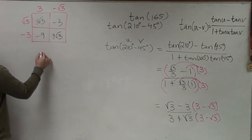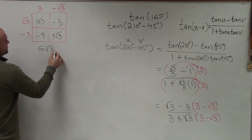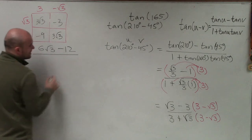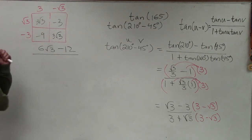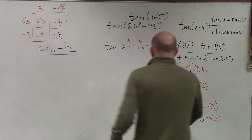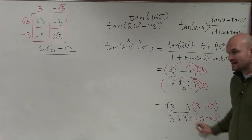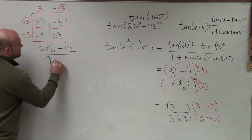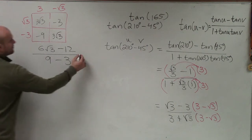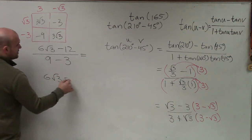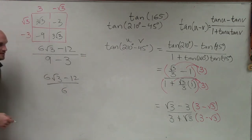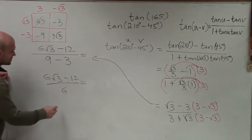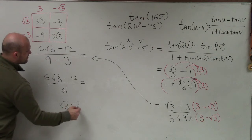Combining the numerator terms gives 6 square root of 3 minus 12. In the denominator, applying difference of two squares: 3 times 3 is 9, and square root of 3 times negative square root of 3 is negative 3, so that becomes 9 minus 3 which equals 6. So I have 6 square root of 3 minus 12 divided by 6. I can now divide 6 into both terms.